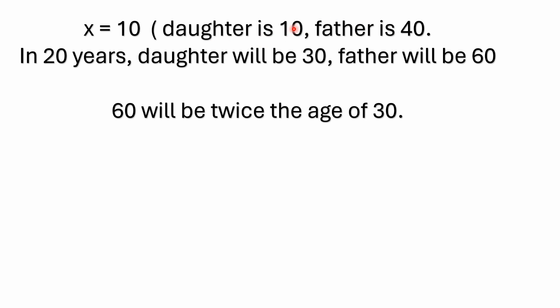So in 20 years, that's pretty simple. You just add 20 to both of those ages, that would make the daughter 30 and the father 60. And then that follows because 60 will be twice the age of 30.